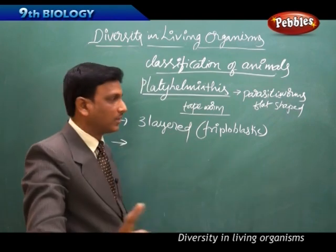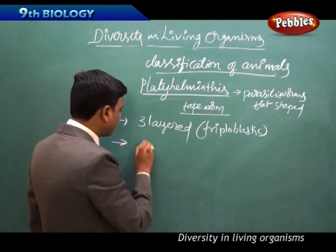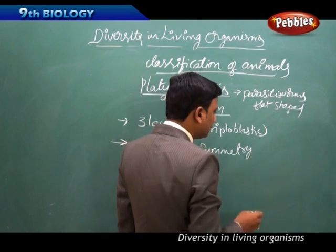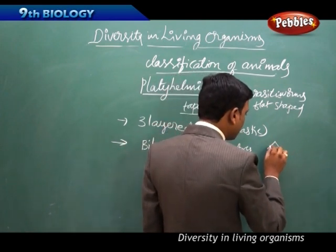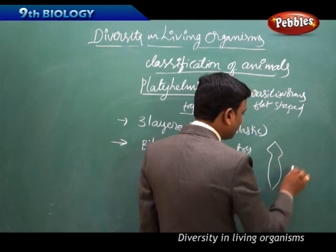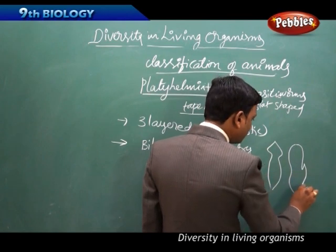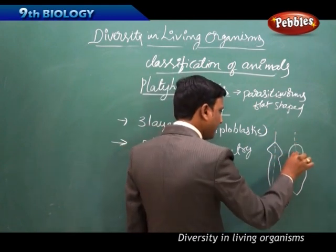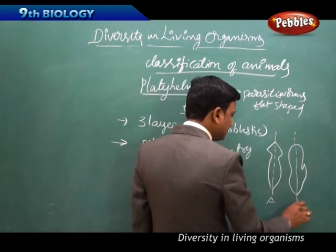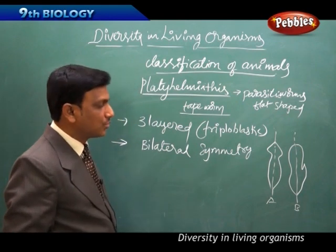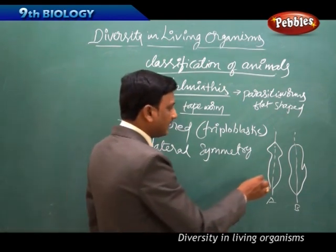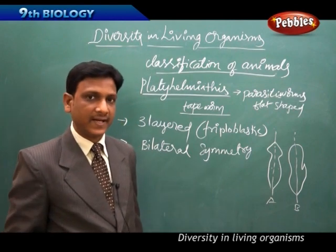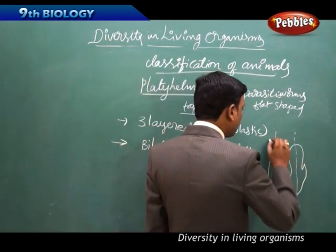Another important feature of Platyhelminthes is bilateral symmetry. Bilateral symmetry means the animal can be cut into two identical halves. If you divide the organism equally down the center, you get two similar halves — this is bilateral symmetry.